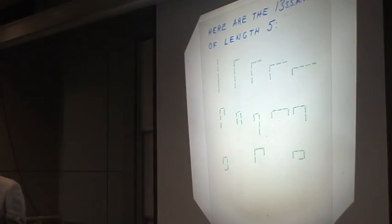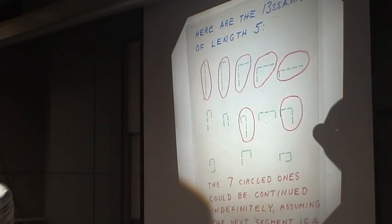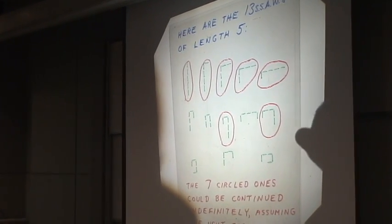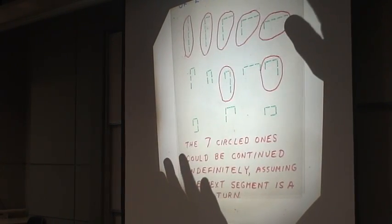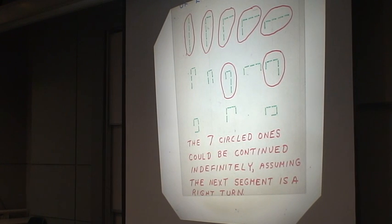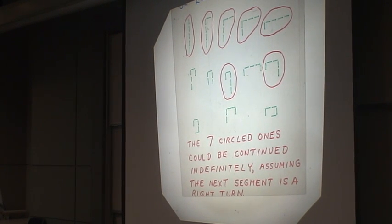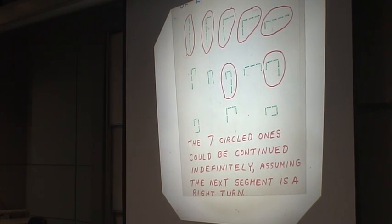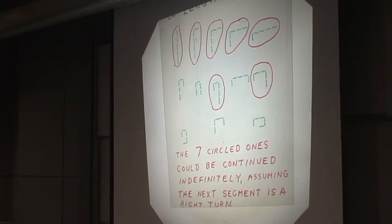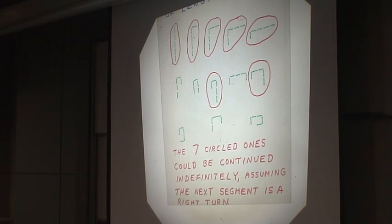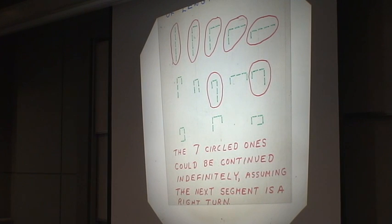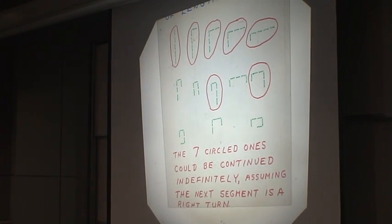If you want to have spiral self-avoiding walks with five segments in them, these are the 13 that are possible. Of these, there are seven, and I am circling here, that could be continued indefinitely, assuming the next segment is a right turn. Some of these, the uncircled ones, if you turn right at the end of the walk, you are not going to be able to go on indefinitely. But with the seven circled ones, these are called CSSAWs, concatenatable spiral self-avoiding walks.